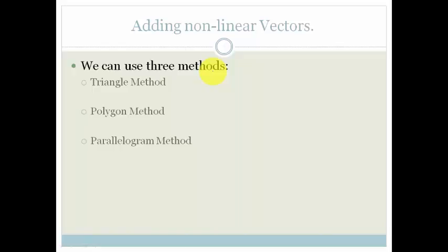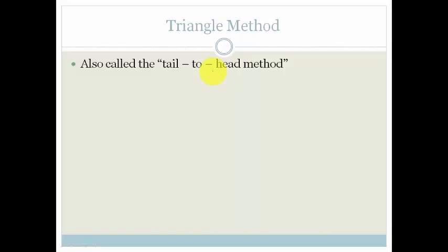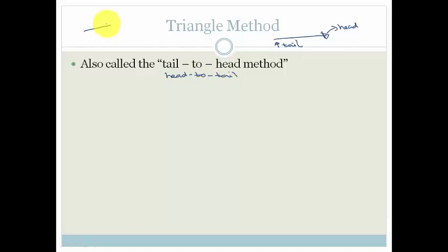Let's have a look at the triangle method. It is also called the tail-to-head method, or some textbooks call it the head-to-tail. If you draw a vector, remember you've got an arrow — the little bit with the arrow is called the head, and the other end is called the tail. So the triangle method says that all our vectors have to be head-to-tail or tail-to-head. In other words, we draw one vector, and then the next one starts where the first one ended — showing those directions.